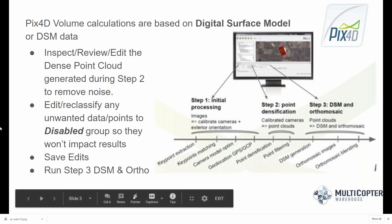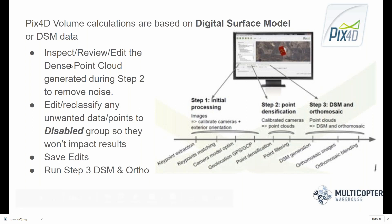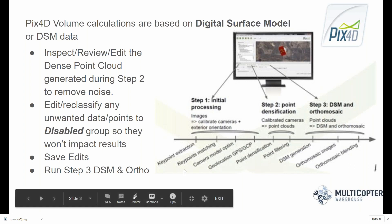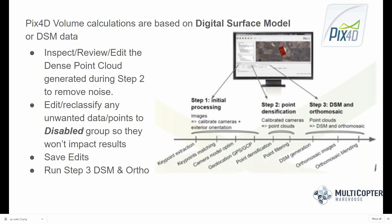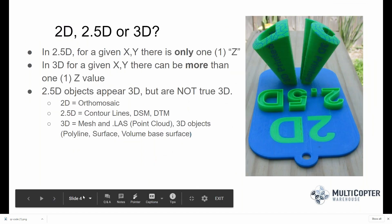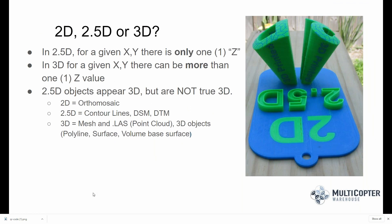We want to go through and inspect and review the point cloud at the end of step 2 to make sure it's in good condition and we're happy with the results prior to running step 3, where we create the digital surface model and orthomosaic. That digital surface model will be the basis for all the volume calculations that PIX4D does.